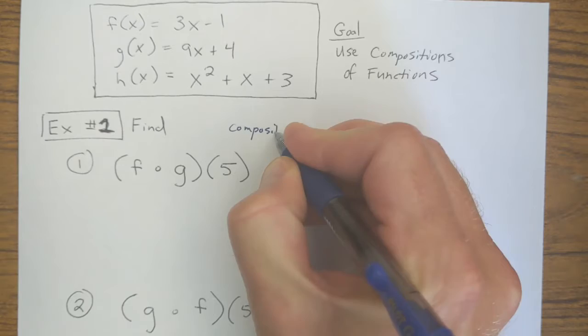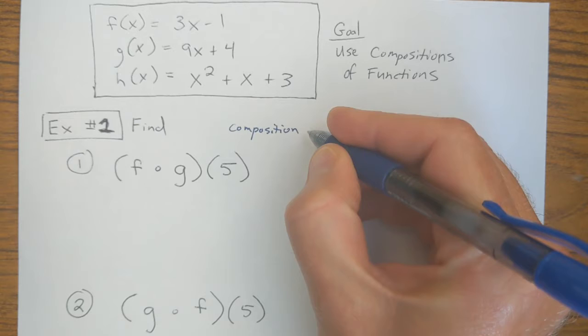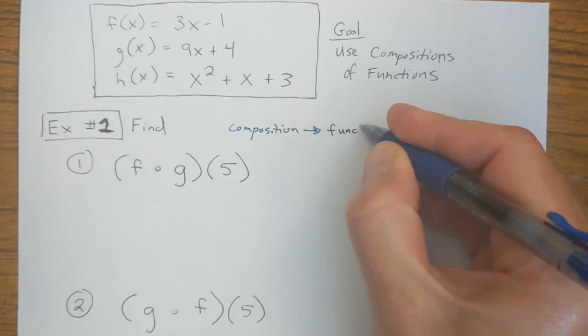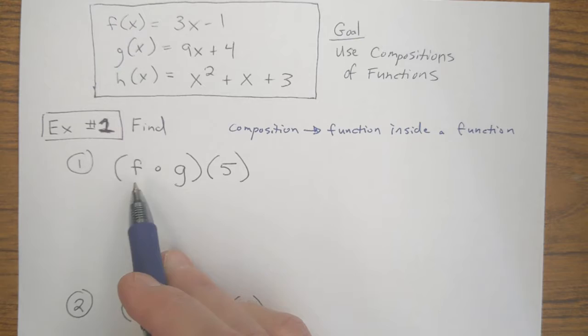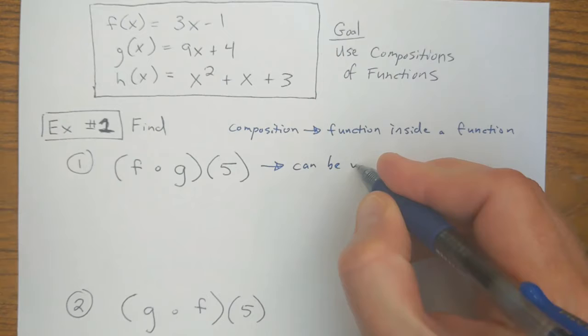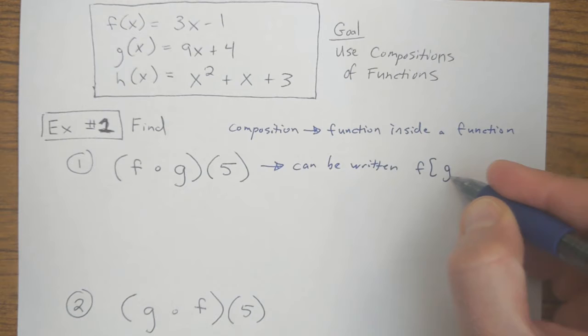And I do recommend you write these examples down and work them out along with me. A composition is, to put simply, it's when you put a function, one function, inside a different function. So when you have this little circle here, this can actually be rewritten as F of G of 5.